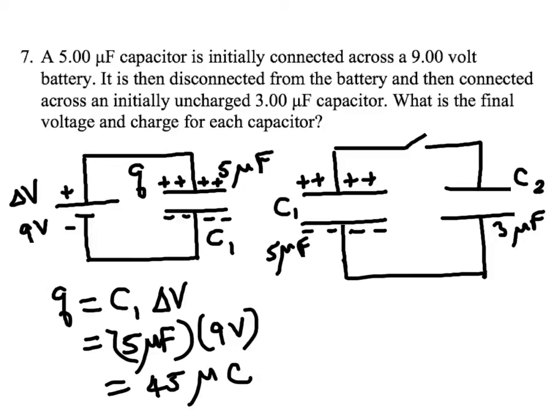So it's fully charged, and then the problem says you disconnect the battery and then take this fully charged capacitor and you connect it across an initially uncharged 3 microfarad capacitor. So I just put a switch here just to say that before the connection is made, and that's how it looks.